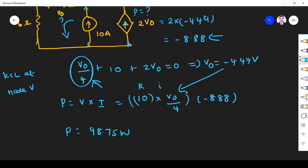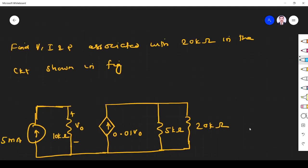So that is what VI. If you simplify what you get is P is equal to 98.75 watts. For this V0 you substitute minus 4.44 volt value. So what we get is P is equal to 98.75 watts. Next problem.